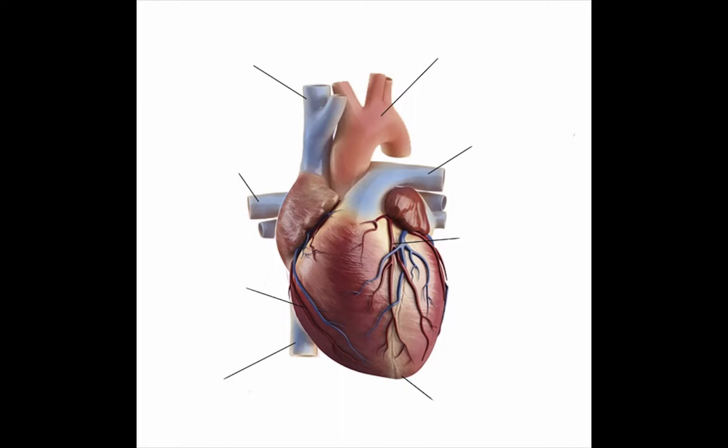For this first structure here, this is the main artery of the body supplying oxygenated blood to the circulatory system. Blood leaves the heart through this aortic valve and it travels through this structure.